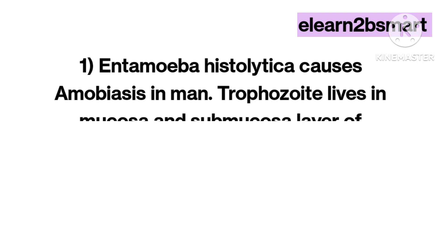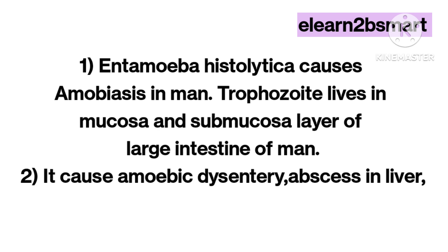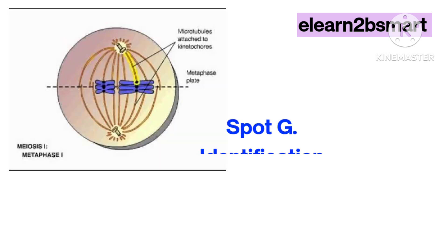Spot F identification: The given spot F is a photograph of disease amoebiasis. Comments: 1. Entamoeba histolytica causes amoebiasis in man. The trophozoite lives in mucosa and submucosa layers of the large intestine. 2. It causes amoebic dysentery and abscesses in liver, lungs, and brain.